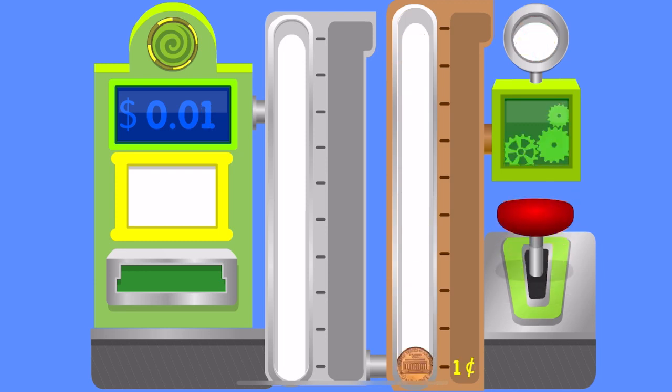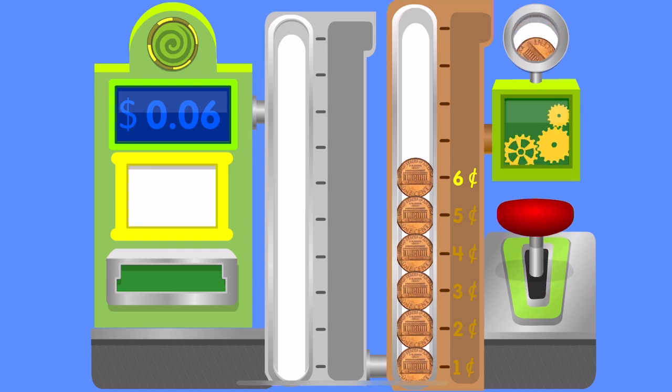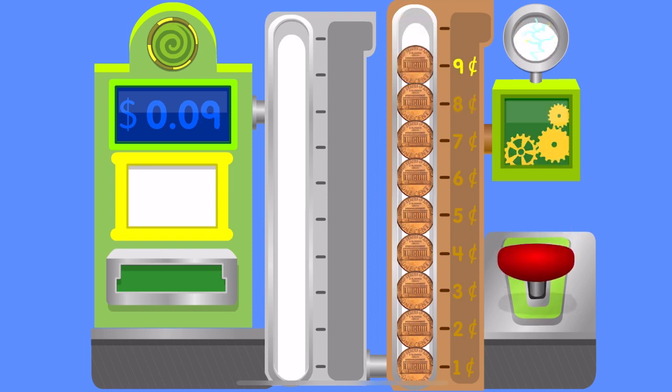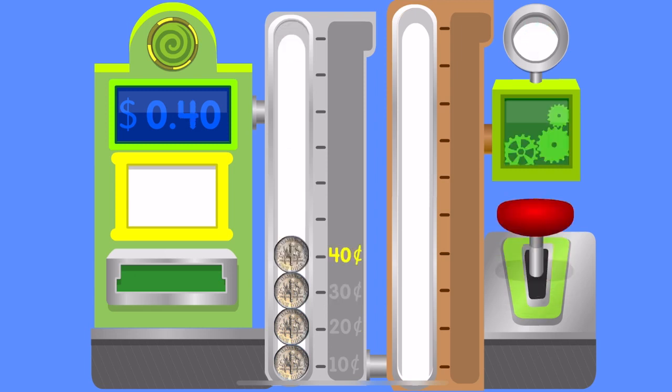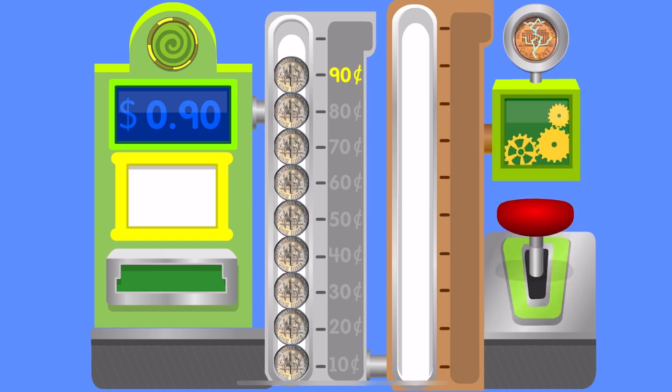One penny, two pennies, three pennies, four pennies, five pennies, six pennies, seven pennies, eight pennies, nine pennies, ten pennies. Ten cents, twenty cents, thirty cents, forty cents, fifty cents. Sixty cents, seventy cents, eighty cents, ninety cents, a hundred cents.